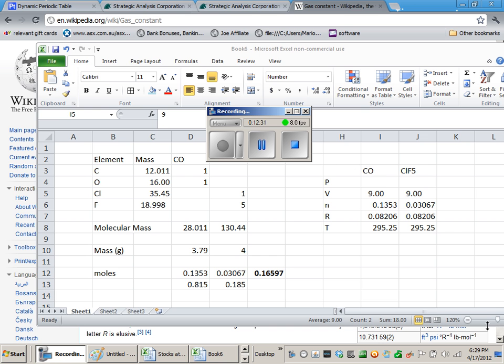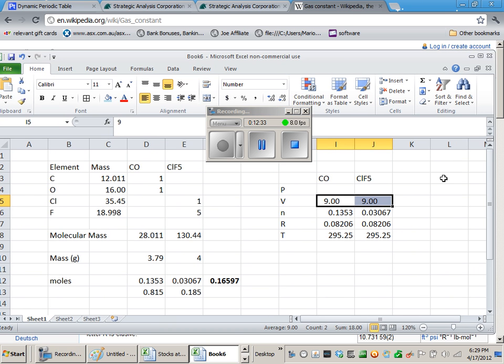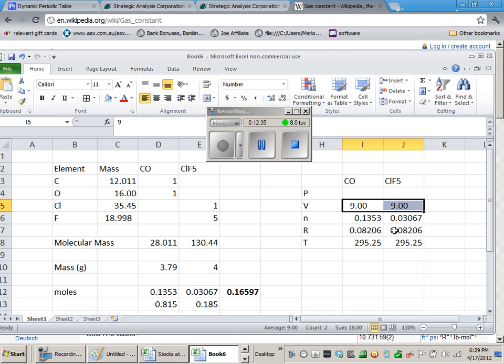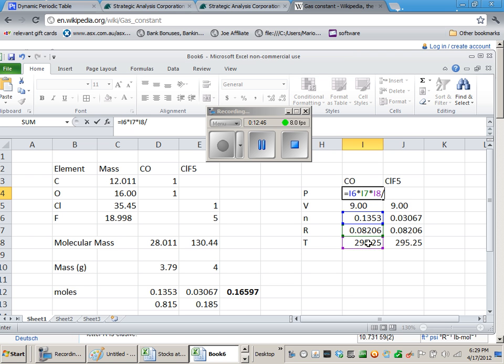So here are the values I'm going to put into that formula we just generated. I made a summary in Excel. I'm going to multiply the number of moles times the gas constant times temperature and divide by volume. And I'm getting the pressure in atmospheres for CO and the pressure in atmospheres for ClF5.